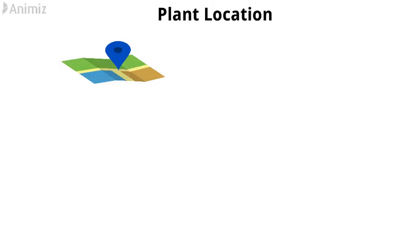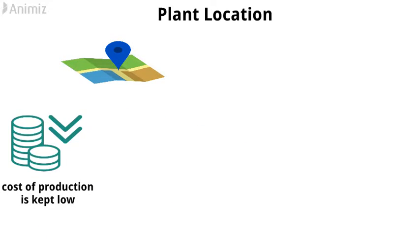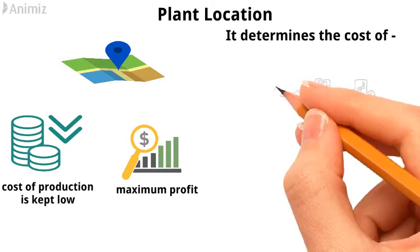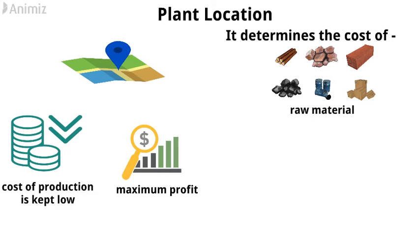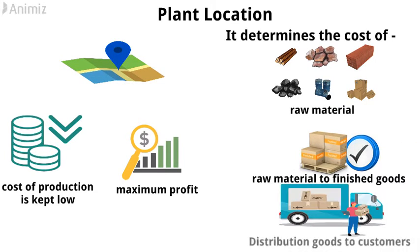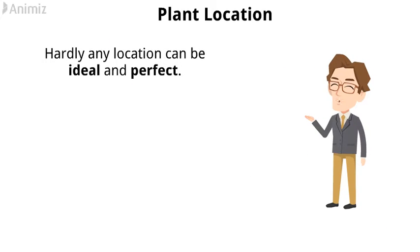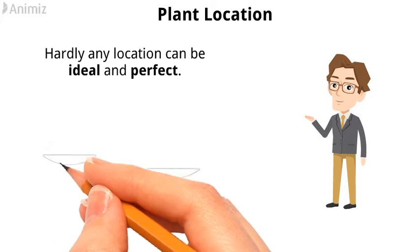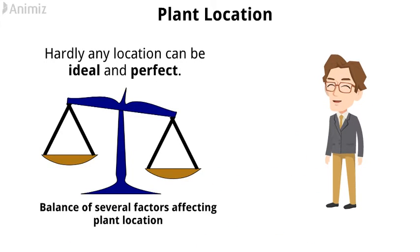A plant should be in a place where the cost of production is kept low in order to gain maximum profit. Identifying an ideal location is very important as it determines the cost of getting suitable raw material, processing raw material to finished goods, and distributing goods to customers. Hardly any location can be ideal and perfect. Decisions regarding selecting a location need a balance of several factors which are affecting plant location.